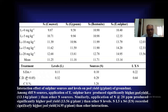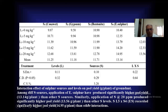Here you can see the interaction effect of sulfur sources and levels on pod yield of groundnut. Among different sources, application of elemental sulfur produced significantly higher pod yield of 13.14 grams per plant than other sources. Similarly, application of sulfur at the rate of 20 ppm produced significantly higher pod yield of 13.56 grams per plant than other sulfur levels. Using the source of elemental sulfur at 20 mg per kg (20 ppm) recorded significantly higher pod yield of 14.95 grams per plant than other interactions.